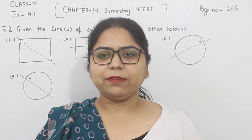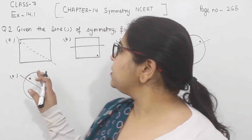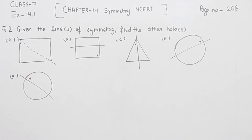Hello everyone, this is Preeti. We are here with another question of exercise 14.1, page number 268, question number 2: given the lines of symmetry, find the other hole. In this question, one of the holes and the line of symmetry are given to us, and we have to find the second hole in the given figure.